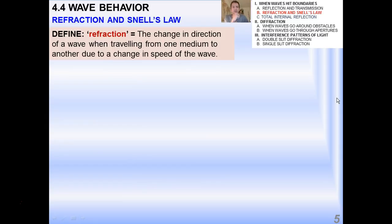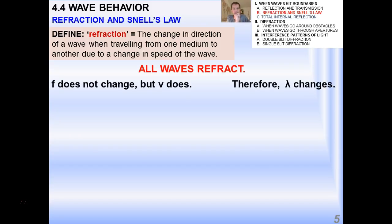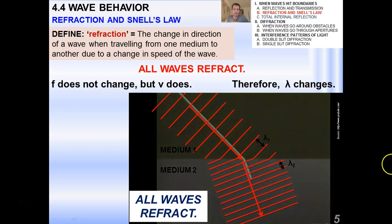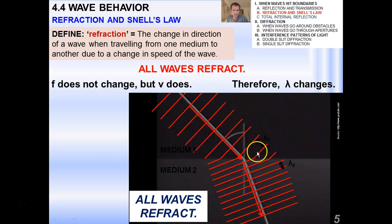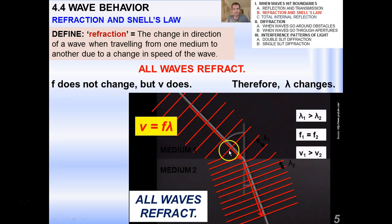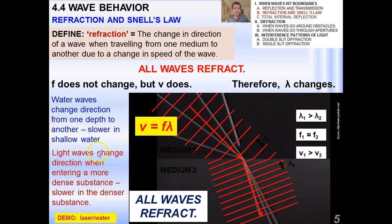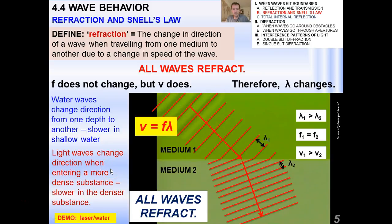Now, I'm going to formally derive Snell's Law for you, even though we've talked about it a bit in class. Remember that refraction is the change in direction of a wave when traveling from one medium to another due to a change in the wave's speed. And we've said before that all waves refract. The frequency doesn't change, but the speed does. And because of the wave equation, that means that the wavelength also changes. So the wavelength is actually shorter inside the medium than it was outside.